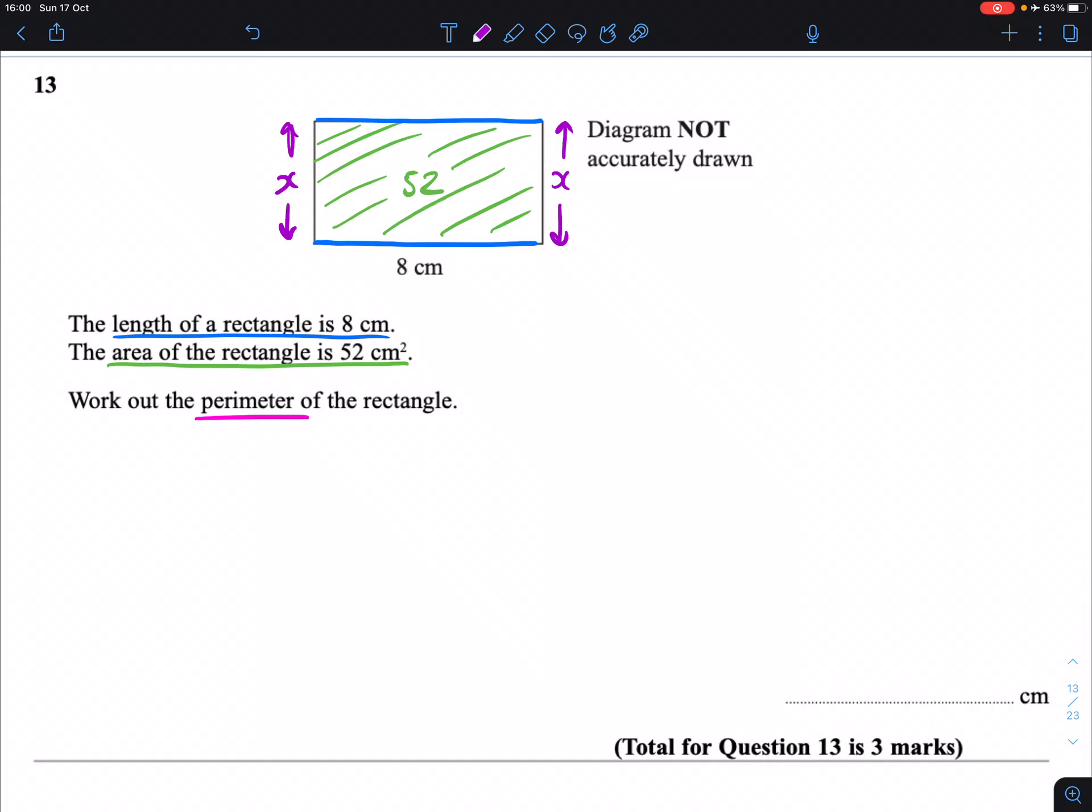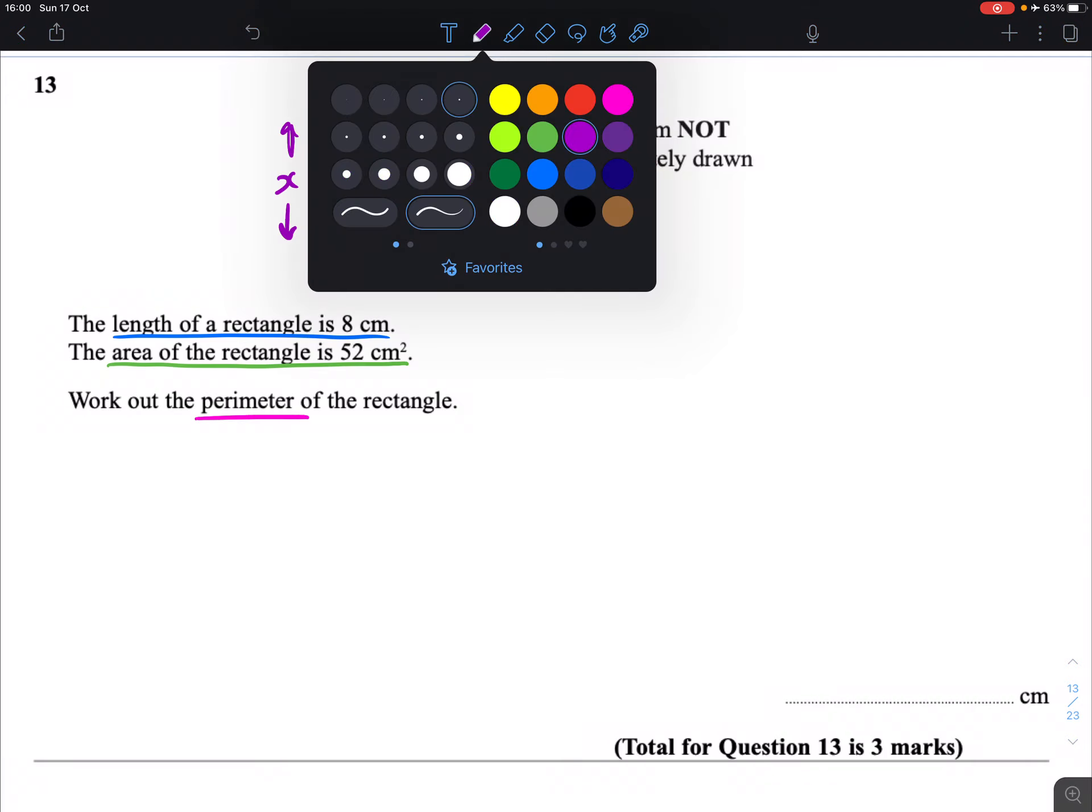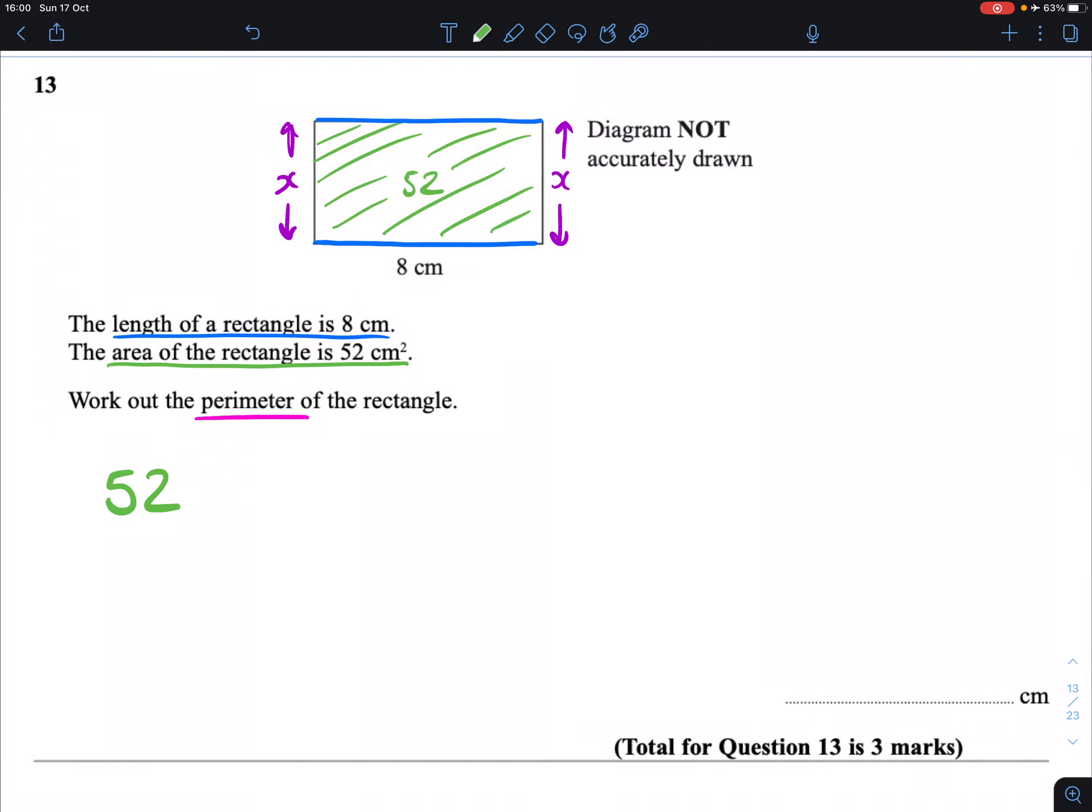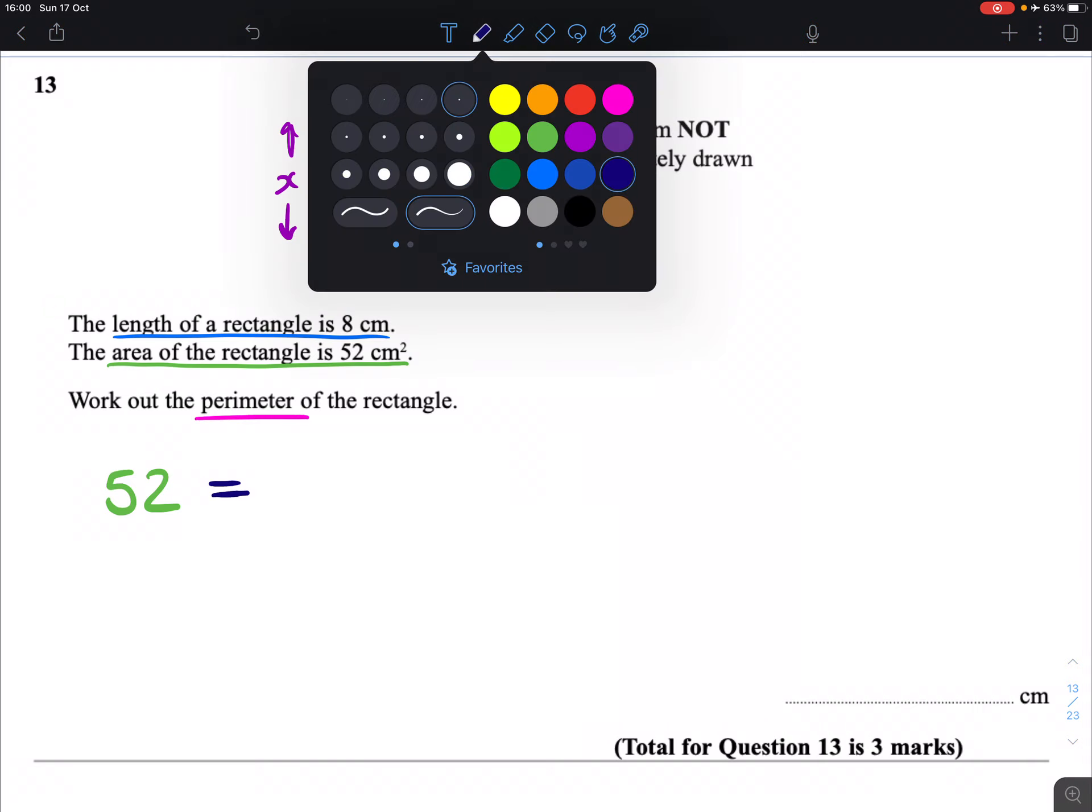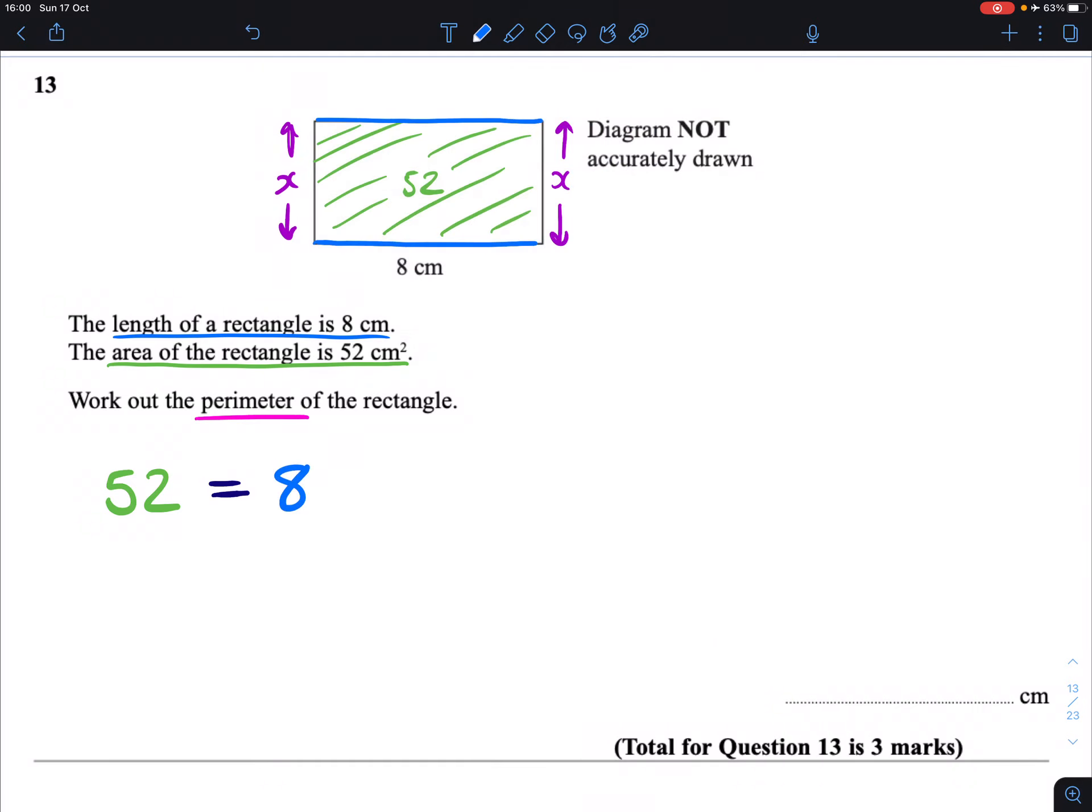So what is the area of a rectangle? The area of a rectangle is base times height. So that means that 52 is going to equal our base times our height, which in this case is going to be our 8 times x, which gives us the following: 52 is 8x.